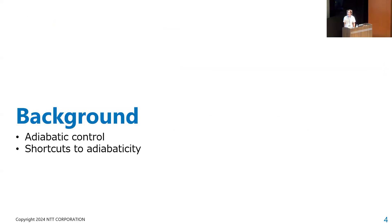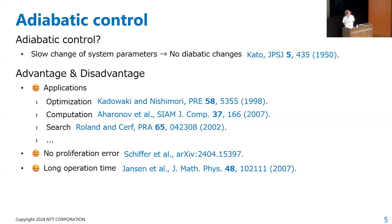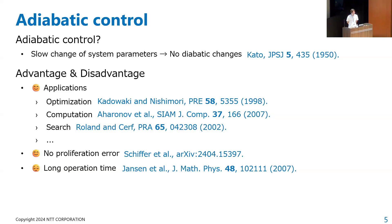In the background, I will explain the methods of shortcuts to adiabaticity. Everyone likely knows this, so I will be brief. When we change the Hamiltonian slowly, no diabatic transitions happen, and we can track the energy eigenstate of the system. For example, we can start from a trivial ground state and arrive at some non-trivial ground state of an Ising spin glass. There are many applications, and quantum annealing is included. Adiabatic control is robust against some errors.